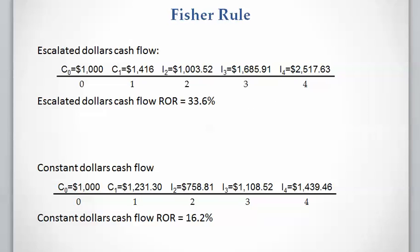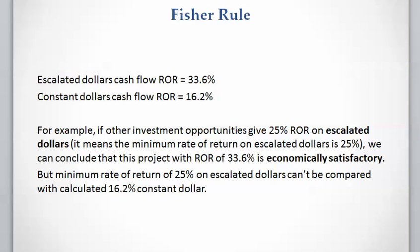Here is the summary of the previous example's results. The escalated dollar cash flow rate of return is 33.6%, and the constant dollar cash flow rate of return was 16.2%. So we have two rates of return: the escalated dollar cash flow rate of return and the constant dollar cash flow rate of return.